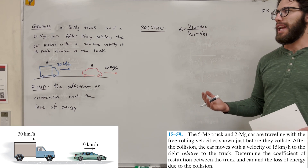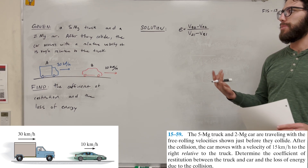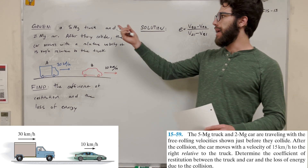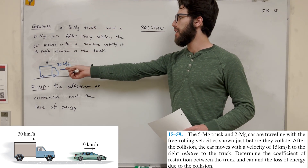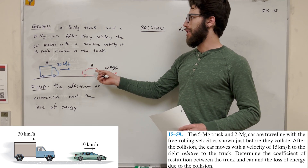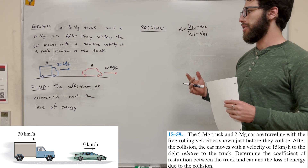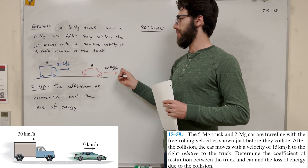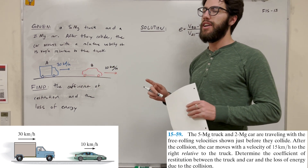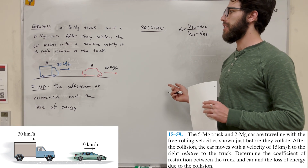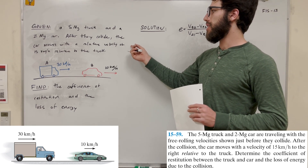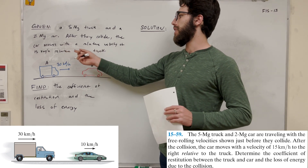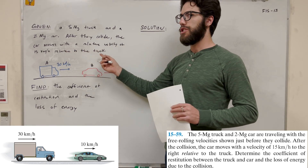What's up, Cal Gang? Welcome back to Sun Dynamics. So we've got a big problem here. We have a 5-megagram truck and a 2-megagram car, and they're going to collide with each other. These velocities are their initial velocities before they collide. And it tells us that after they collide, the car moves with a relative velocity of 15 kilometers an hour relative to the truck.